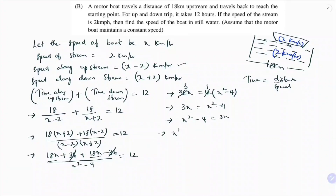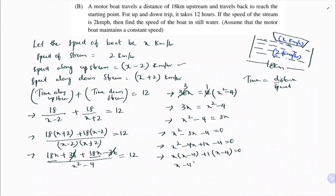Rewriting: x² − 4x + x − 4 = 0. Factorizing: x(x − 4) + 1(x − 4) = 0, which gives (x + 1)(x − 4) = 0.